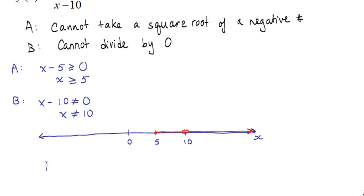Putting these pieces together, we can write down our domain. x is such that x must be greater than or equal to 5, and also, x cannot equal 10.